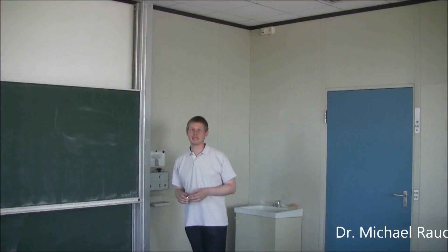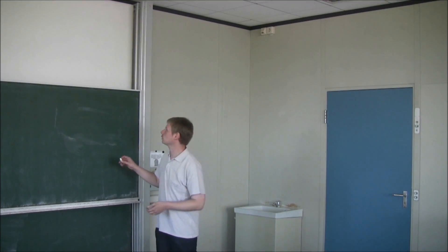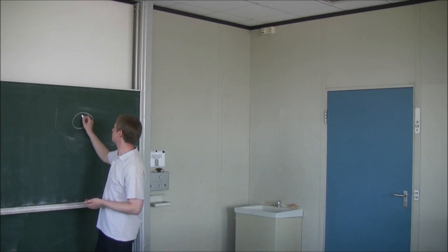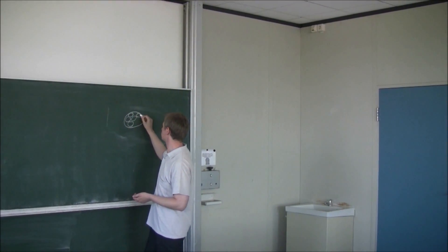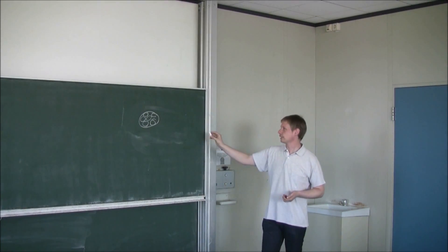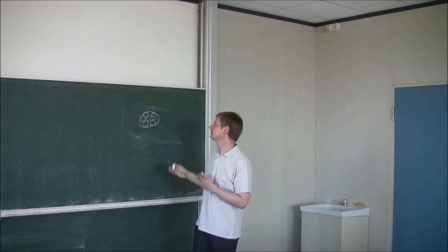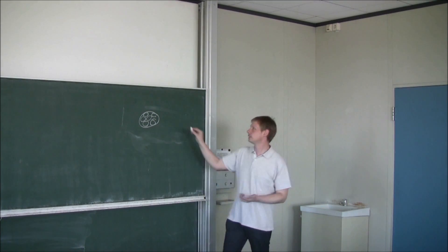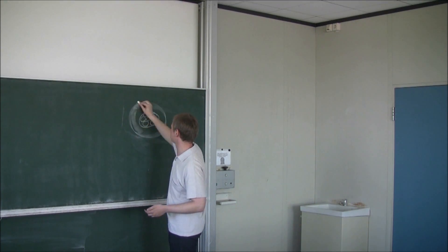Unsere momentane Vorstellung, wie ein Atom aufgebaut ist, ist folgendermaßen. Im Inneren haben wir den Atomkern; dieser besteht aus Protonen und Neutronen. Und außen herum befinden sich die Elektronen. Diese sind nicht auf irgendwelchen Bahnen, sondern sie befinden sich einfach als eine Wolke außerhalb.